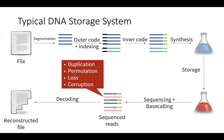With this in mind, let's look at a general system that shows how a typical DNA storage system works. You start with a binary file. Since we have the ability to synthesize short DNA sequences, you first need to segment this data into small parts. When you put this data into the solution, you lose the ordering of the data, because these segments — when you read them back — you can't read them back in the same order you wrote them. So you need to add some sort of indexing, writing 1, 2, 3, 4 to the sequences so that you can recognize which one is which when you read it back.